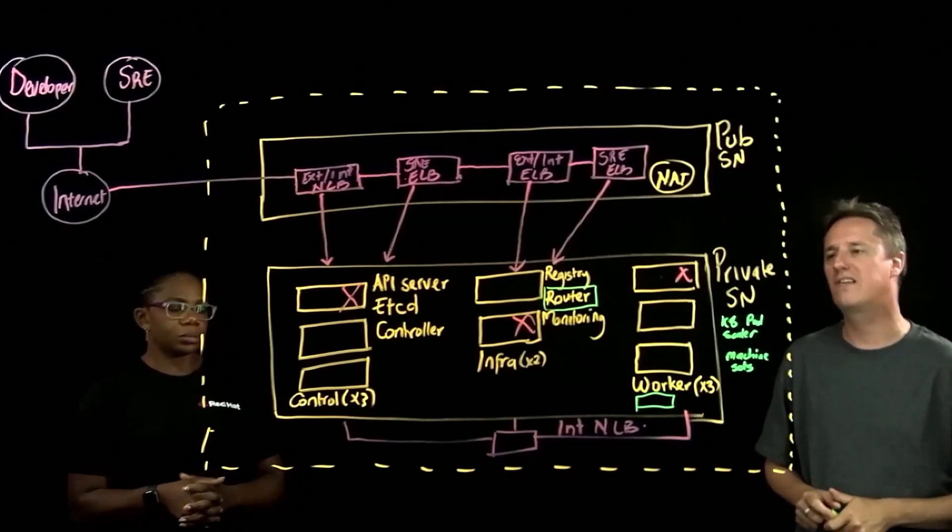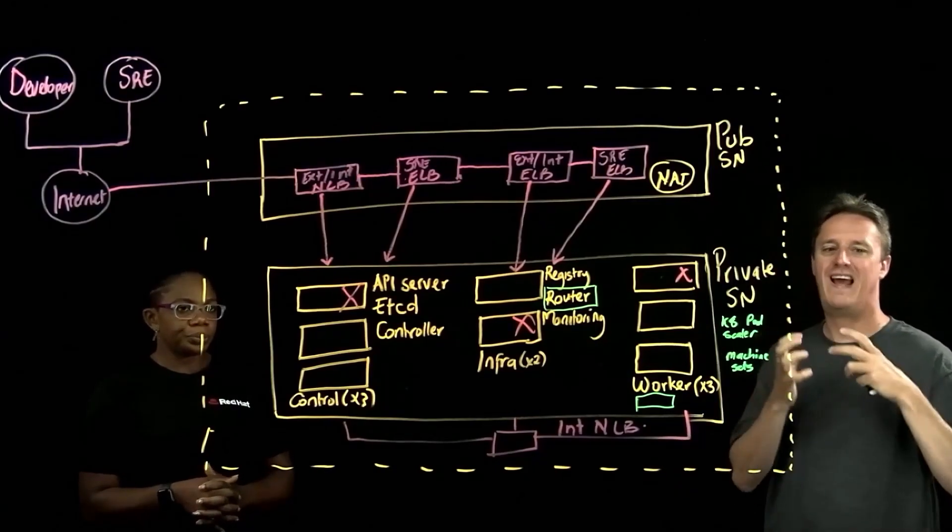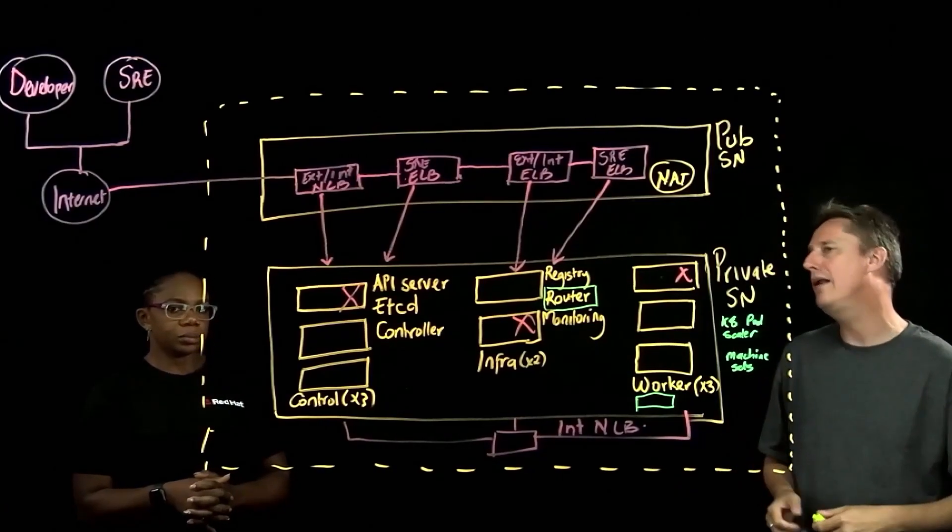So again, we've got that resilience mechanism of OpenShift from a application or a pod perspective combined with the infrastructure side coming through from that machine set. And this is all in a single region, taking advantage of OpenShift and multiple availability zones and scaling constructs.